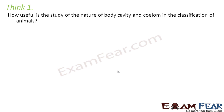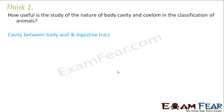How useful is the study of the nature of body cavity and coelom in the classification of animals? We have discussed a couple of parameters which are the basis for classification of Kingdom Animalia. Coelom was one of the important parameters. So how did it help us? Let us quickly review what is coelom — it is the cavity between the body wall and the digestive tract, or the cavity between body wall and gut wall.